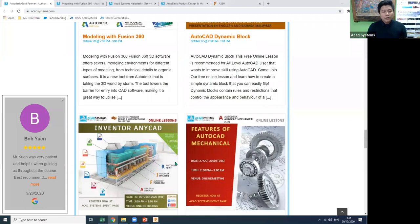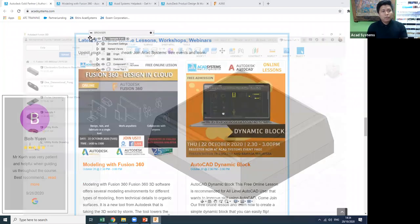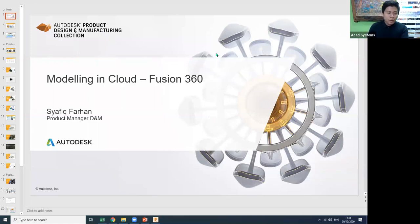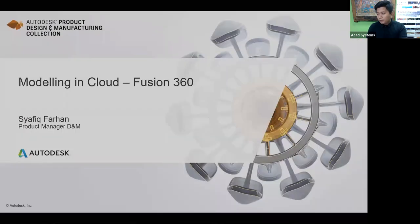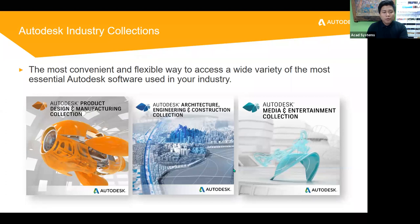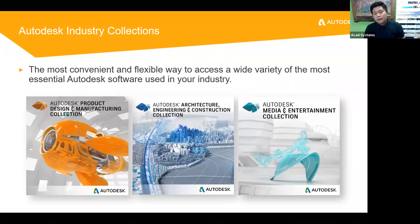Fusion 360 is part of the Product Design and Manufacturing Collection. Before I start, I want to cover the Autodesk collection bundles. Our focus today is the Product Design Manufacturing Collection, which is best for those from a mechanical or manufacturing background to create 3D modeling. For architecture or construction, you can go with the AEC Collection, which includes Revit, Advanced Steel, Civil 3D, and more.